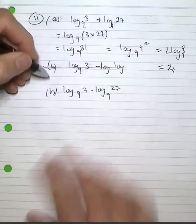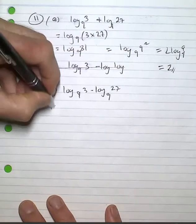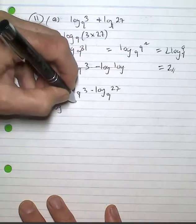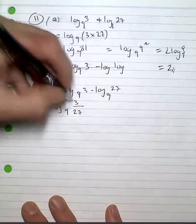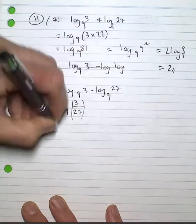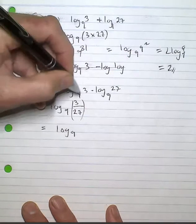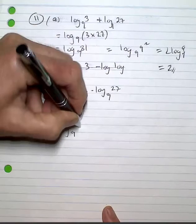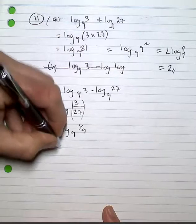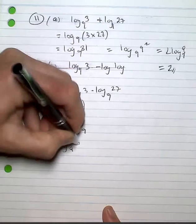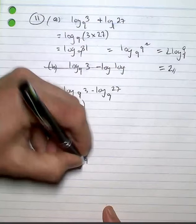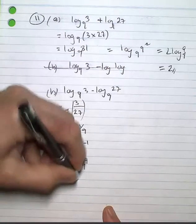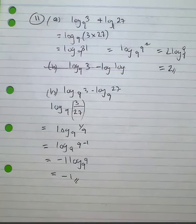In the next instance, I do a division. So I've got log base 9 of 3 divided by 27, which equals log base 9 of 1/9, or log base 9 of 9 to the minus 1, which is negative 1 for my answer in the second instance.